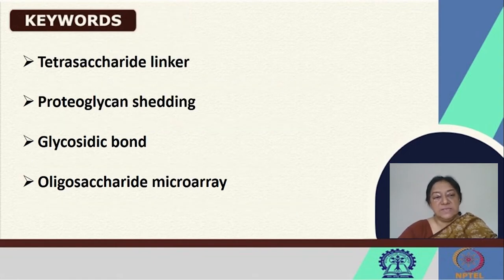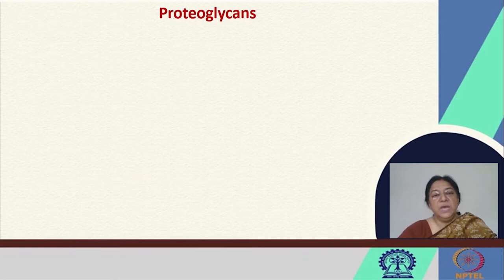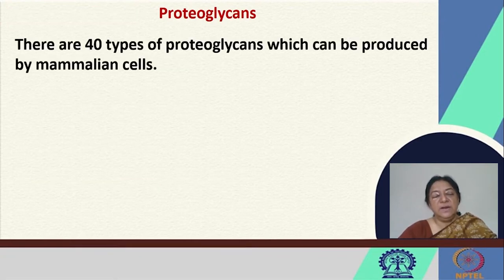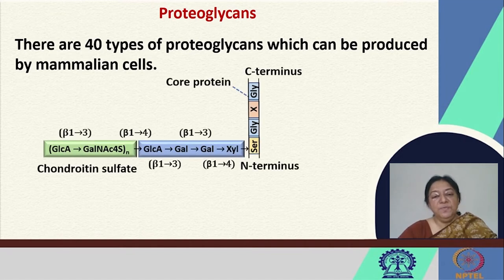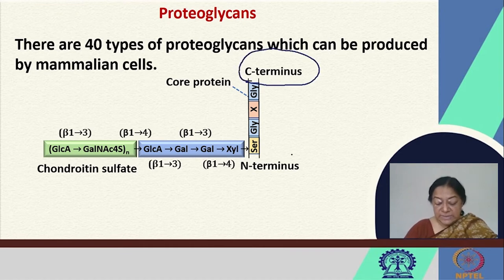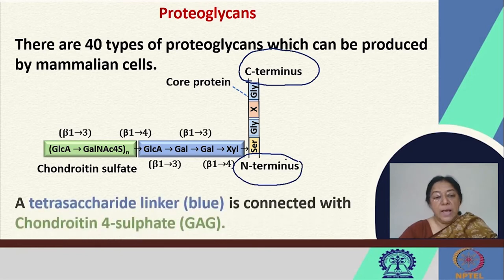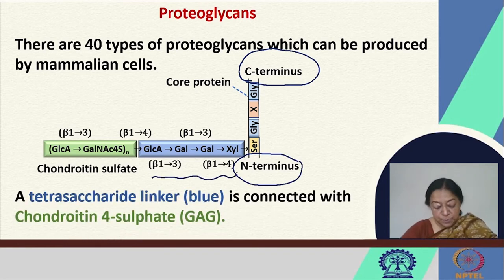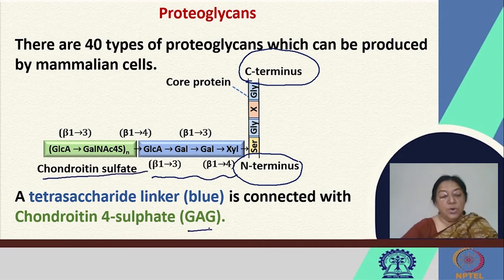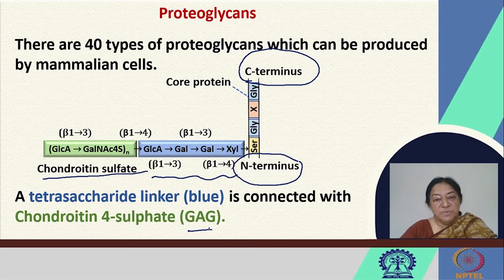In a tetrasaccharide linker for proteoglycans, we will see what amino acid residues are involved in this specific recognition. There are around 40 types of proteoglycans that can be produced by mammalian cells. The core protein has a C-terminus and an N-terminus, and a tetrasaccharide linker shown in blue is connected with chondroitin sulfate. This linker is connected to the serine amino acid residue of the core protein.